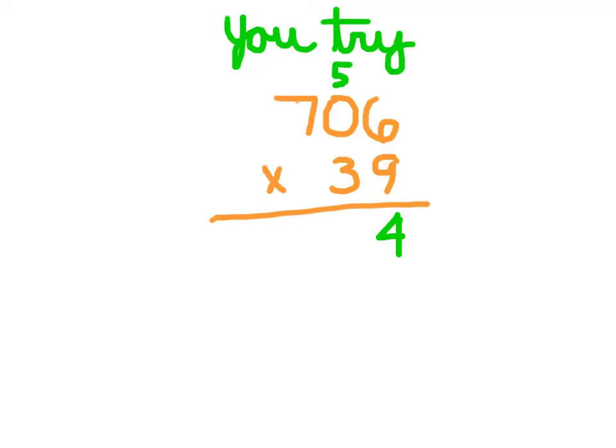9 times 0, which is 0, plus 5, which is 5. And 9 times 7, which is 63. Check your work so far. Hopefully you get 706 times 9, equaling that 6,354.